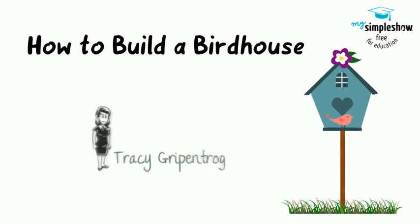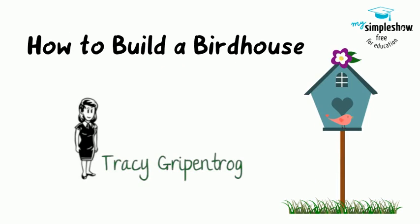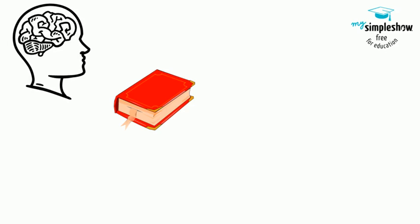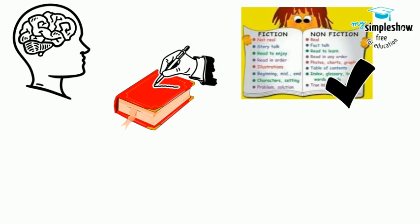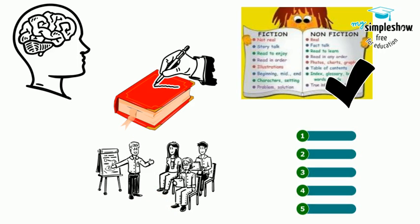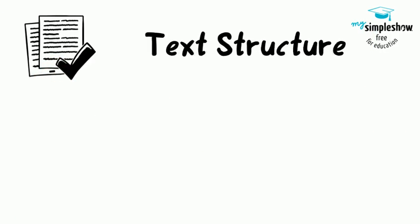How to Build a Birdhouse by Tracy Grippentrog. If this was the title of your new library book, your brain would be expecting it to be filled with a certain style of writing. Your brain would be expecting non-fiction. It would expect the book to explain the steps for making a birdhouse, and it would expect the steps to be written in the correct order.